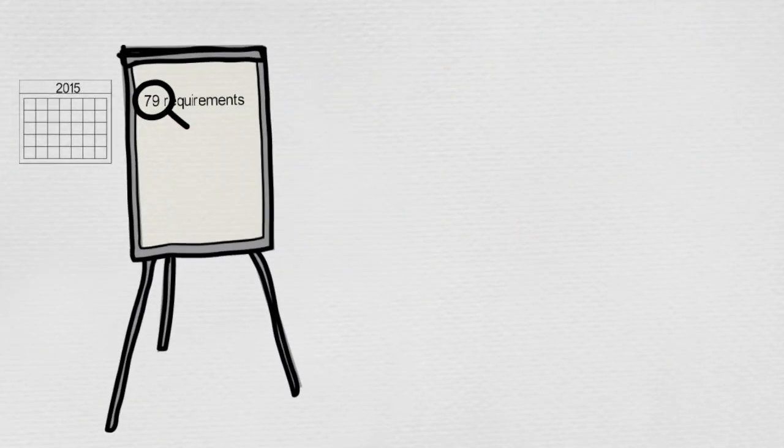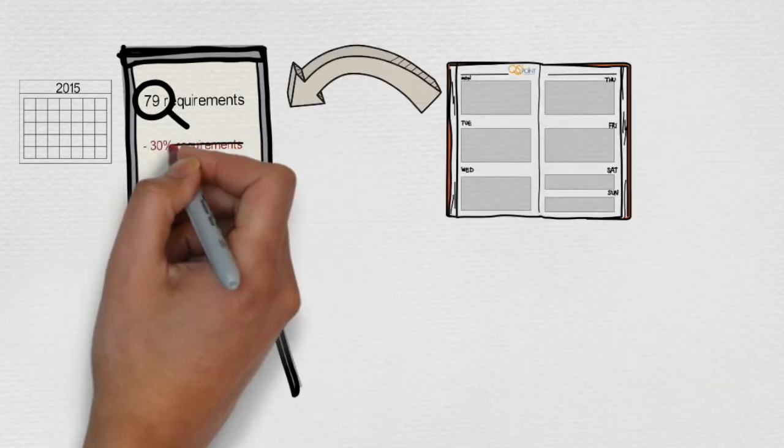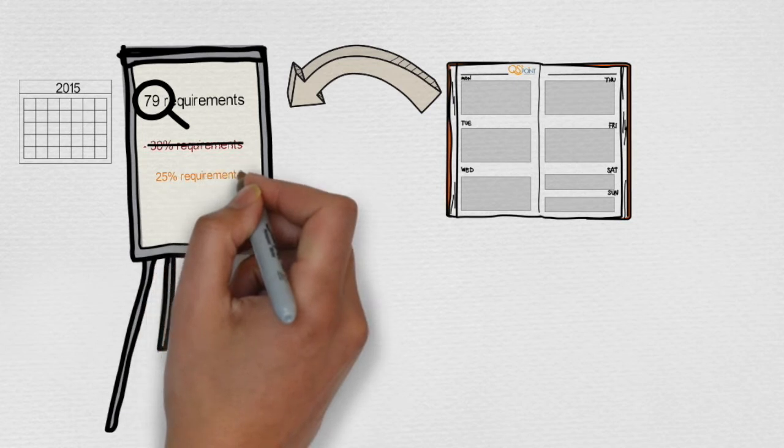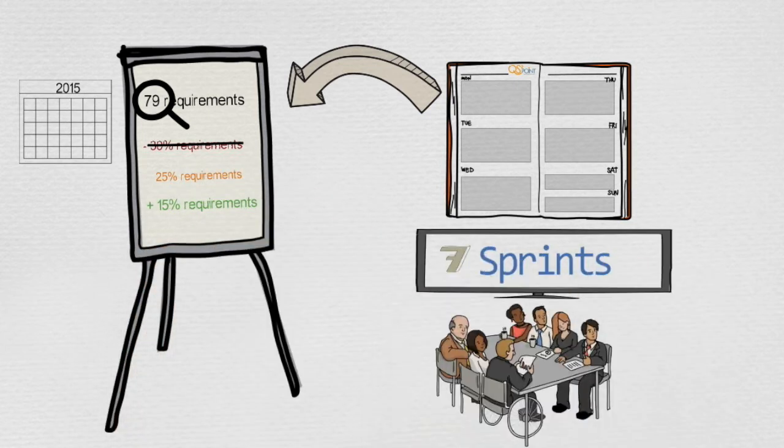In a matter of five business days, we helped John eliminate 30% of unnecessary business requirements, changed 25%, and added 15%. We reorganized the system development into seven sprints, with an additional sprint due to lack of information.